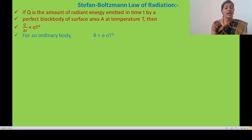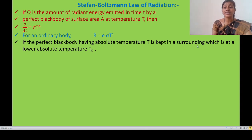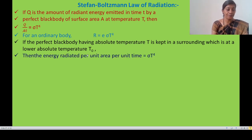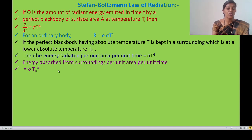For an ordinary body, R equals E·sigma·T⁴. If a perfectly black body at absolute temperature T is kept in a surrounding at lower absolute temperature T₀, then the energy radiated per unit area per unit time is sigma·T⁴, and the energy absorbed from surroundings per unit area per unit time is sigma·T₀⁴.